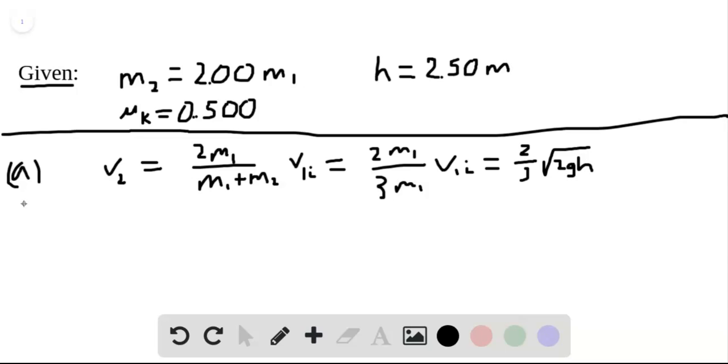Now we can use conservation of energy, which is 1 half M2 V2 squared equals all the energy that's lost to heat, which is the force of friction F sub k times the distance, equal to mu k times M2 times gravity times the distance. So M2's cancel, solve for D.